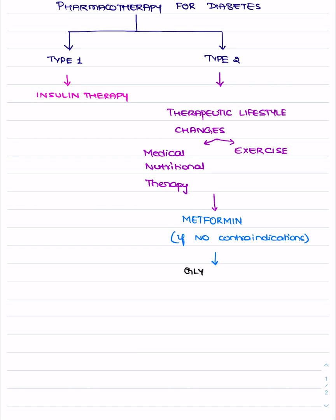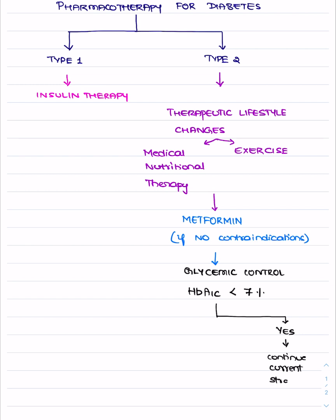After administering metformin, you have to assess glycemic control by checking HbA1c — that is, glycosylated hemoglobin levels. If the glycosylated hemoglobin levels are less than or equal to 7%, you can continue the same current regimen. If the glycemic controls are above 7% — it may be 10 or even 12 — then you need to go with add-on therapies.